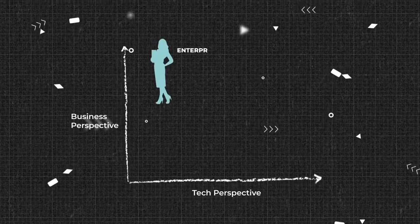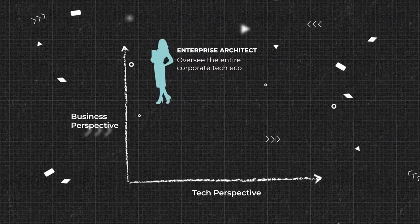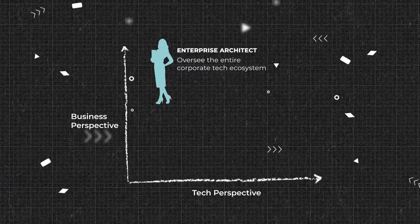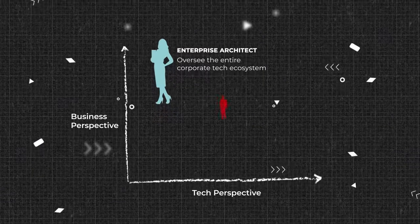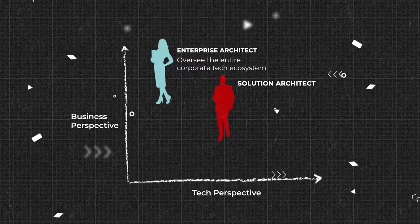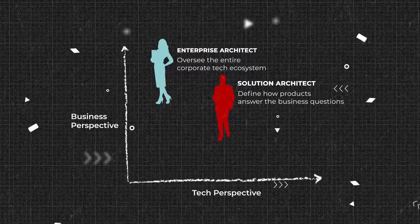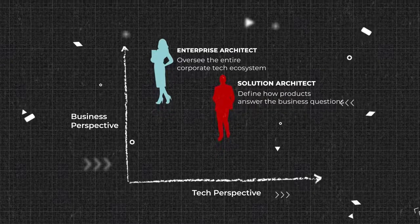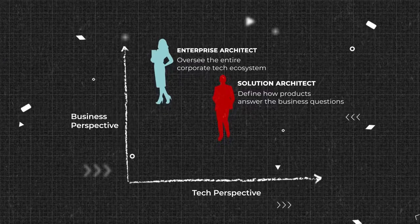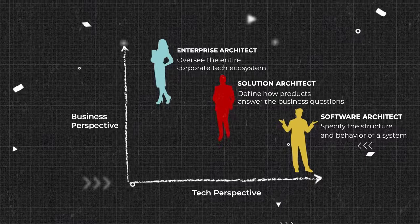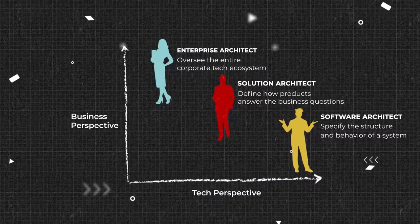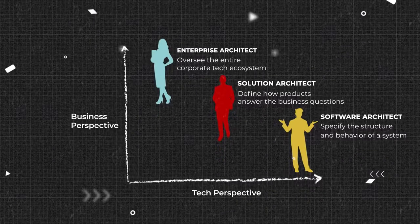Ultimately, the roles differ in how high their vantage points are. Enterprise architects consider the big picture and oversee the entire corporate tech ecosystem from the business perspective. Solution architects work with specific products and define how they answer the business questions with technology. Software architects specify the structure and behavior of a system described by solution architecture from a technical perspective only.